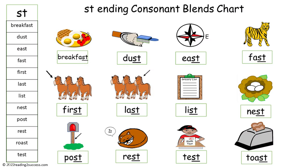With kids, read the words in the chart: breakfast, dust, east, fast, first, last, list, nest, post, rest, test, and toast.